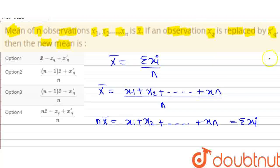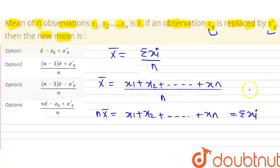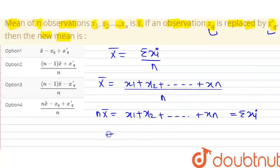Now, we have summation xi. Now, we have a slight change in the observation. This xq is replaced by x'q. So, summation xi changes. This is the new summation xi.